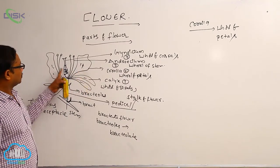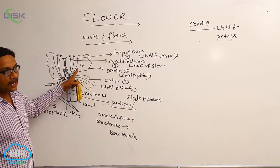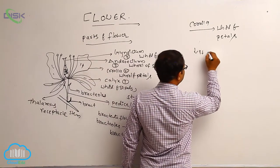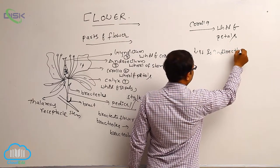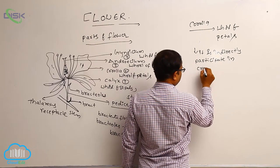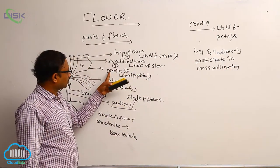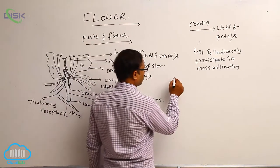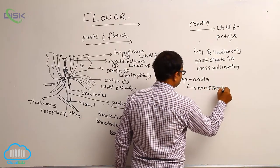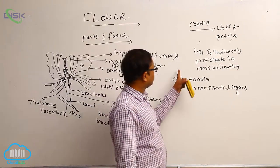In some plants, the corolla or whorl of petals is large in size, and in some plants flowers are small. What is the use of corolla? Corolla attracts insects and so indirectly participates in cross pollination. Because of this, calyx and corolla are non-essential organs.